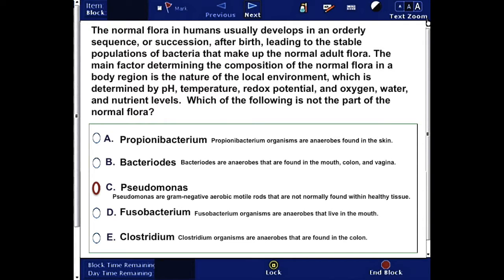Pseudomonas are gram-negative aerobic motile rods that are not normally found within healthy tissues. Propionibacterium is found in the skin. Bacteroides are found in the mouth, colon, and also the vagina. Fusobacterium are found in the mouth, whereas Clostridium are found in the colon.